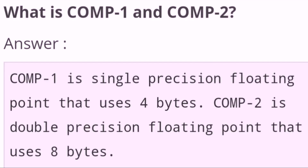What is COMP1 and COMP2? COMP1 is single precision floating point that uses 4 bytes. COMP2 is double precision floating point that uses 8 bytes.